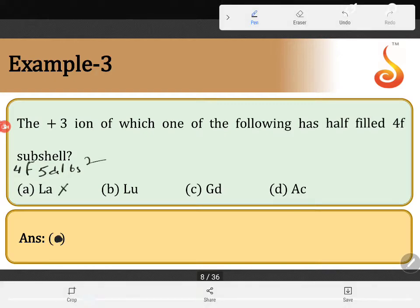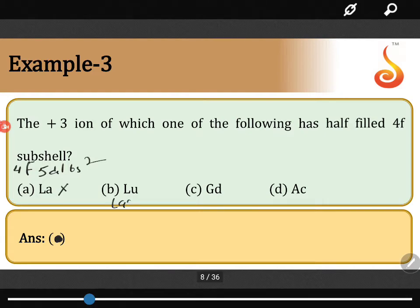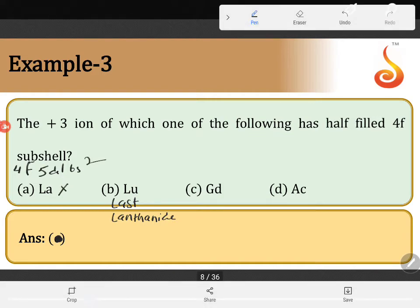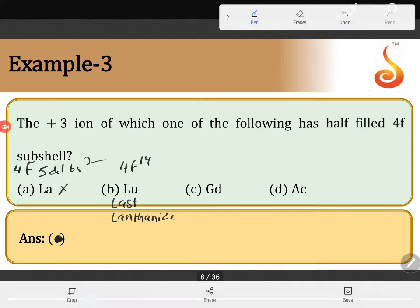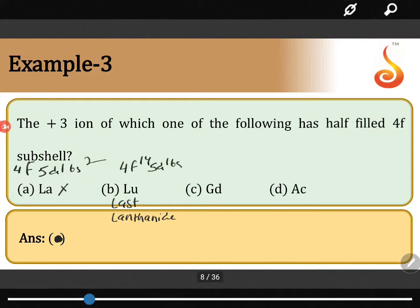Coming to lutetium, lutetium is the last lanthanide, which means that it definitely contains 4F14 along with 5D1, 6S2.